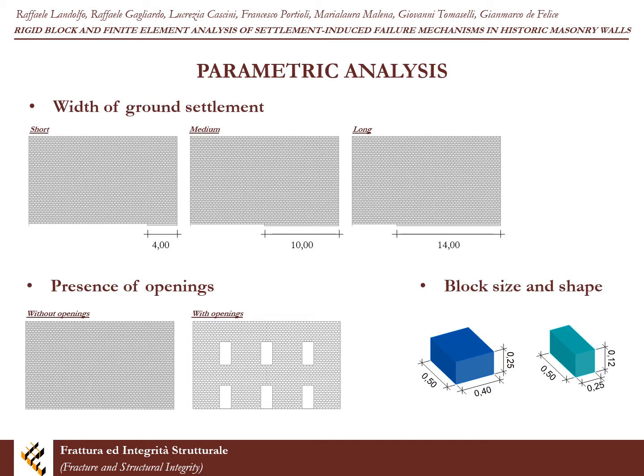Several configurations of masonry walls under vertical settlement are investigated and the corresponding failure patterns resulting in local or global failure modes are presented. A parametric analysis is carried out to investigate the response when changing the width of ground settlement, the block size and shape, and the presence of openings.